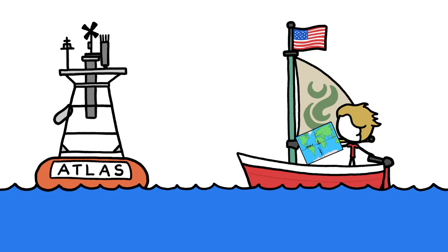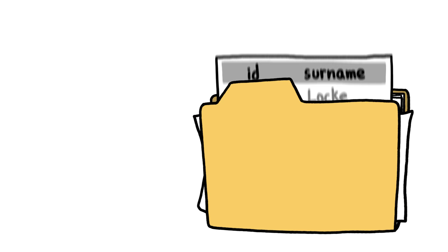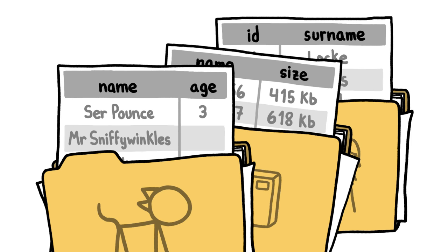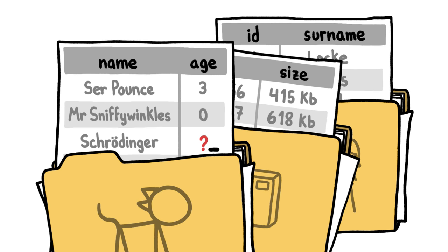Any big database, whether it's storing information about people, or photos, or cats, needs to know the difference between nothing — like zero — and nothing, as in there's no data, it's a mystery. That idea of no data is called Null.